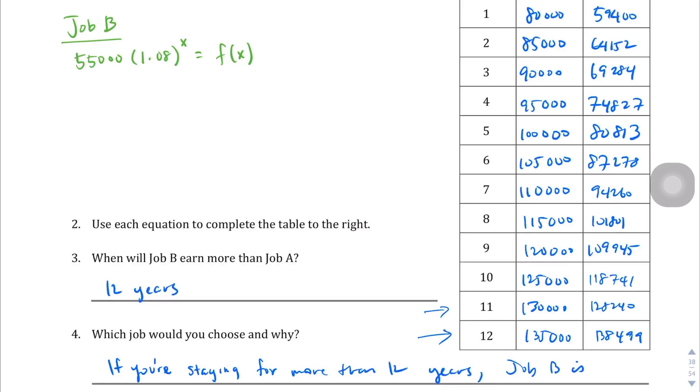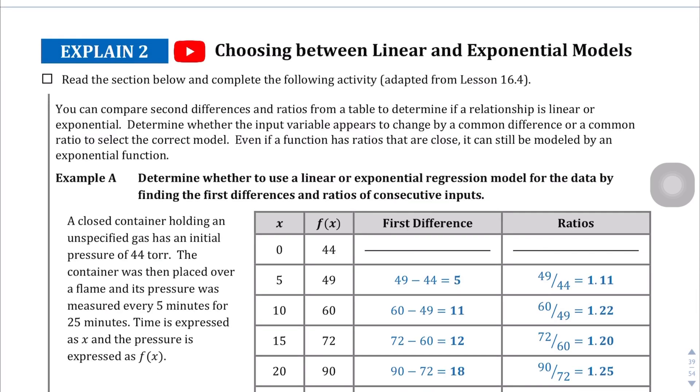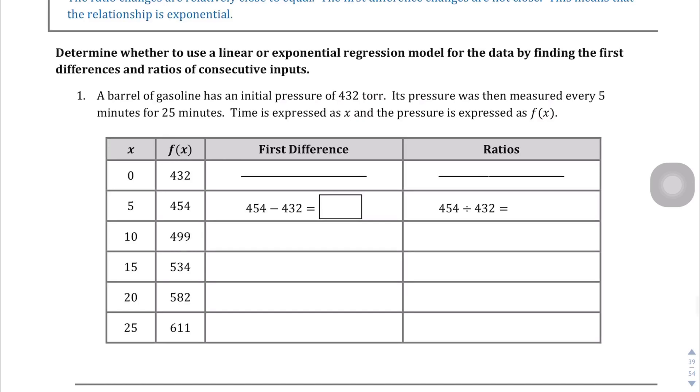Let's go ahead and fill out the next page here. We're just continuing on with what we've been doing before. So again, we're going to take a look at the first differences. They're not going to be constant, but we're going to look at the ratios. So 454 minus 432 is 22, and then 499 minus 454 is going to equal 45. 534 minus 499 equals 35, 582 minus 534 equals 48, 611 minus 582 is equal to 29. And you'll see that the first differences are not equal.